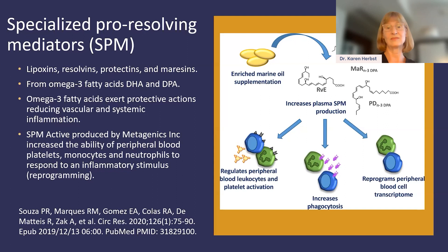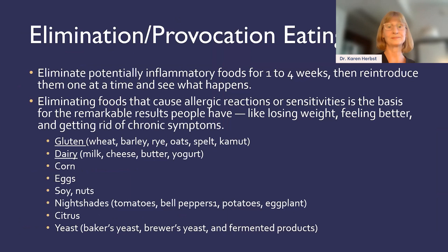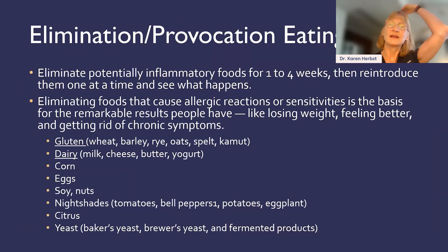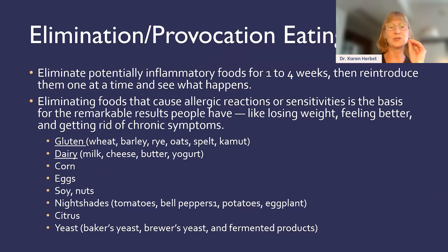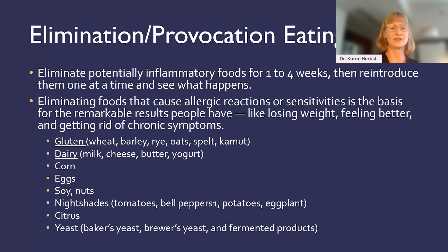So: low-carb diet, spices, and omega-3 fatty acids — three general, easy ways to empower yourself to reduce inflammation at home. If you don't know what to eliminate in terms of food, you can do an elimination provocation eating plan: eliminate inflammatory foods for one to four weeks, then reintroduce them to see what happens, going by how your gut, brain, and pain feel. Common foods that create allergic or inflammatory reactions include gluten, dairy, corn, eggs, soy, nuts, nightshade vegetables, citrus fruits, and yeast. Not everyone will react, but if you do and you eliminate them, you may find you lose a little weight, your swelling goes down, and your chronic symptoms reduce.